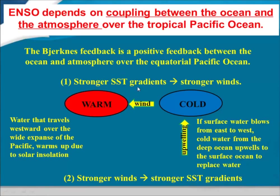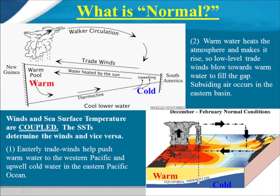This positive feedback accounts for the growth and persistence of the El Niño-Southern Oscillation — one of the reasons it has such a lasting effect. Equivalently, positive feedback can work in the opposite direction: weaker SST gradients lead to weaker winds, which lead to a weaker SST gradient. It's this to-and-fro between these two mutually reinforcing variables that really allows El Niño and La Niña to arise in the tropical Pacific.